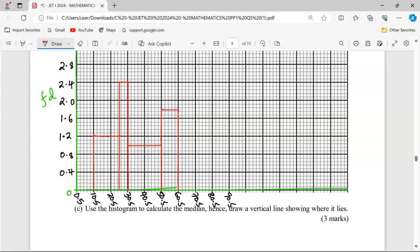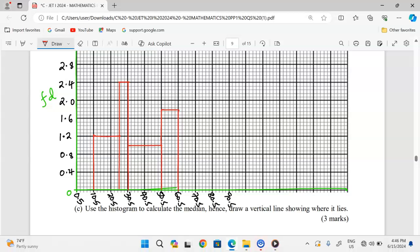Finally, we have from 60.5 to 75.5, and the height is 2. With the height of 2, we go to 75.5, then we enclose the bar. This is now the histogram required, the histogram to represent the data.